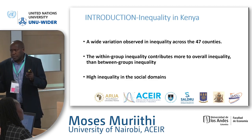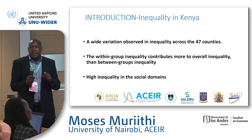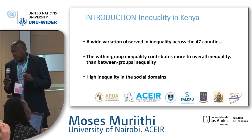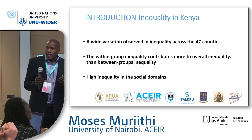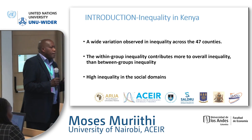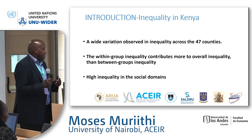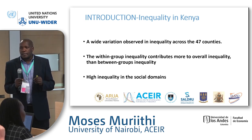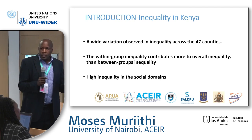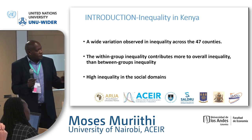Under Kenya's new constitution, government operates in two tiers, with 47 counties at the second tier. We note a wide variation in inequality across these 47 counties, driven by dissimilarity in development among them. We also find that inequality is highly driven by within-group inequality rather than between-group inequality.